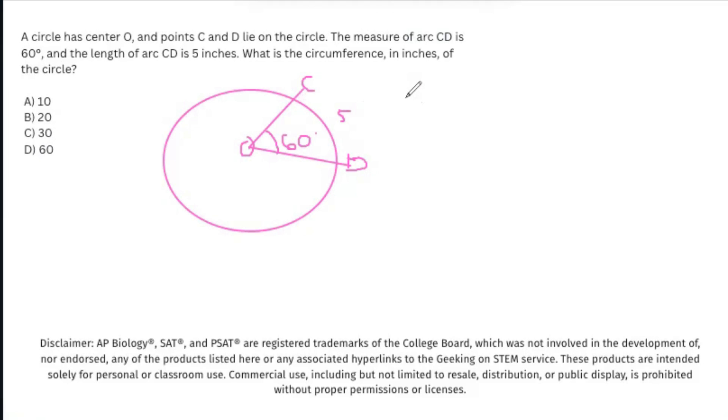So in this case, the formula is part over whole. What we mean by that is 60 degrees over the entire degree of the circle, because we've cut out a piece of the entire circle. So 60 over 360 times the circumference, or C, which is going to give us a part of this, which is 5.